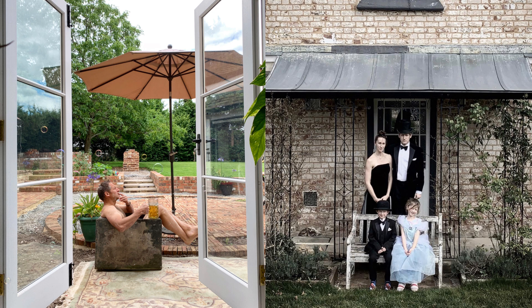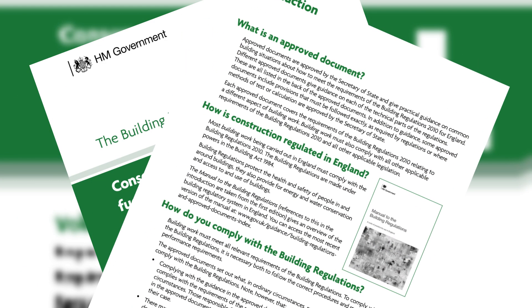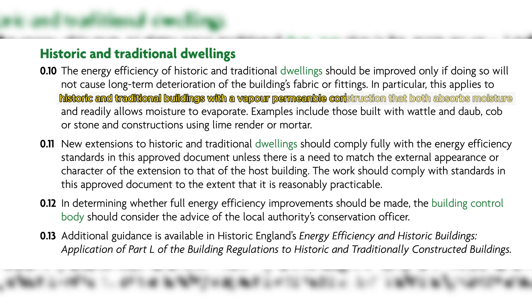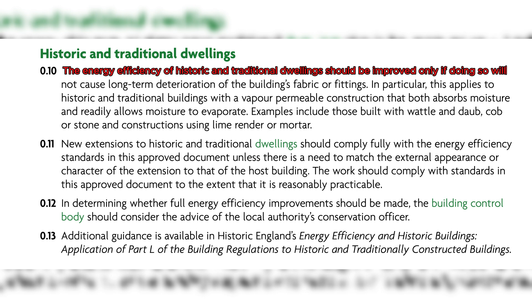Building regulations are only just starting to catch up. Approved Document L, for the conservation of fuel and power, was last amended in 2021 and came into effect in June last year, as part of the government's measures to reduce the UK's carbon emissions. Because of the negative impact that using inappropriate methods can have, there are important exceptions for historic and traditional buildings with a vapor-permeable construction. Crucially: 'The energy efficiency of historic and traditional dwellings should be improved only if doing so will not cause long-term deterioration of the building's fabric or fittings' — a sentence that is quite often missed, including by some building control officers.